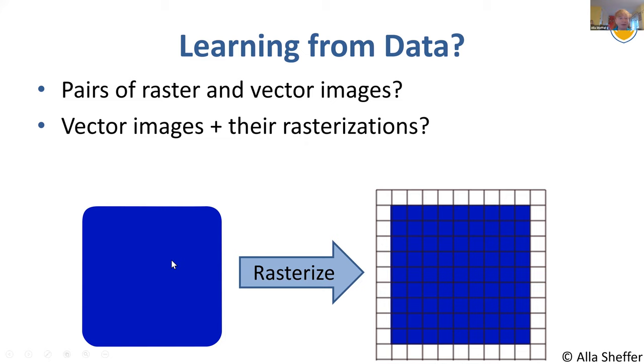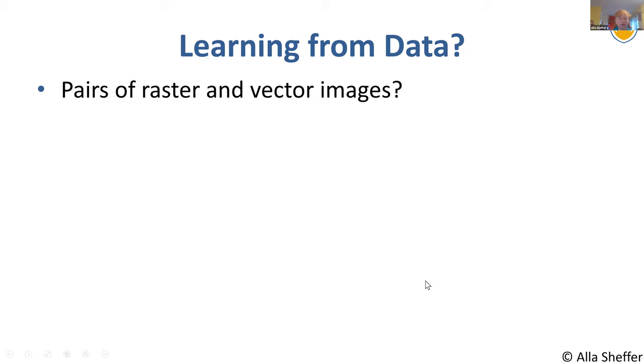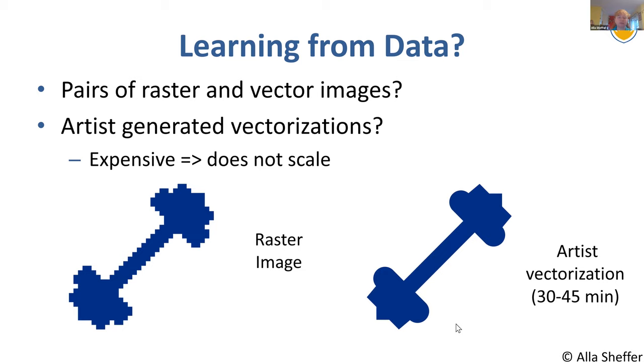Inversion inherently is not useful, partly because multiple vector inputs will give you the same raster. So we are trying to invert an uninvertible problem. And we want the right inversion, the one which is consistent with what people would give us. Well, we can also have artist generated vectorizations. Something a lot of current research is looking at is, well, let's have humans generate correct outputs and then use those. The problem with this type of approaches is they are expensive.